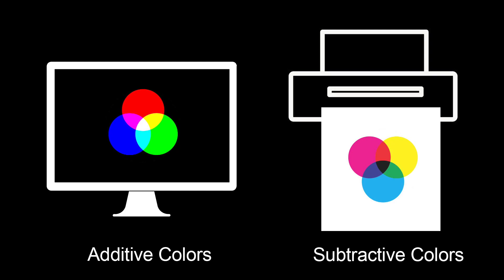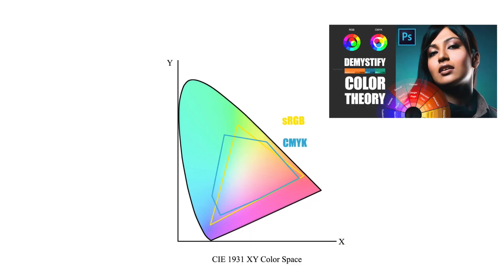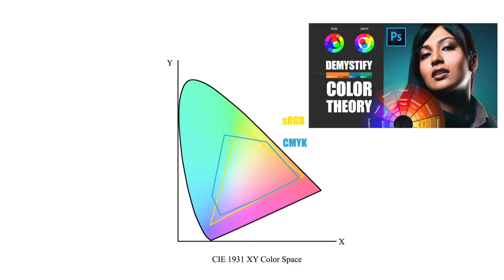When it comes to offset printing press, their inks can't produce the bright and vibrant colors like a backlit display. So a smaller color gamut has to be used based on a subtractive color model called CMYK. You can learn more about RGB and CMYK and additive and subtractive colors in the video linked above.